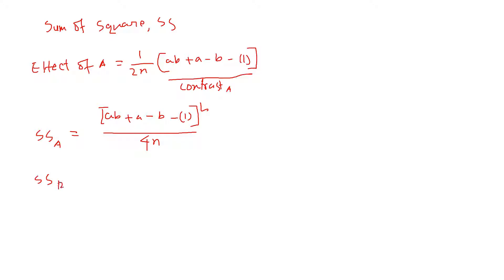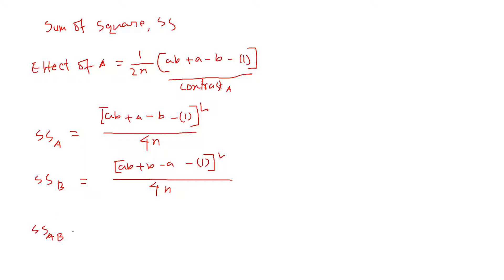Similarly, the sum of squares of B can be calculated using the contrast of B: (AB + B − A − control)² divided by 4N. And also, the sum of squares for AB, the interaction effect, is (AB + control − A − B)² divided by 4N.